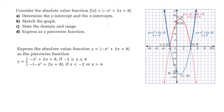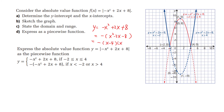In grade 11 we already learned quadratic functions, so here we also discuss the absolute value of a quadratic function. For y equal to absolute value of negative x squared plus 2x plus 8, we first draw y equal to negative x squared plus 2x plus 8. It opens downward, and by factoring we find two x-intercepts: 4 and negative 2. Because there's absolute value, we flip everything below 0 upward, so the new graph looks like this.